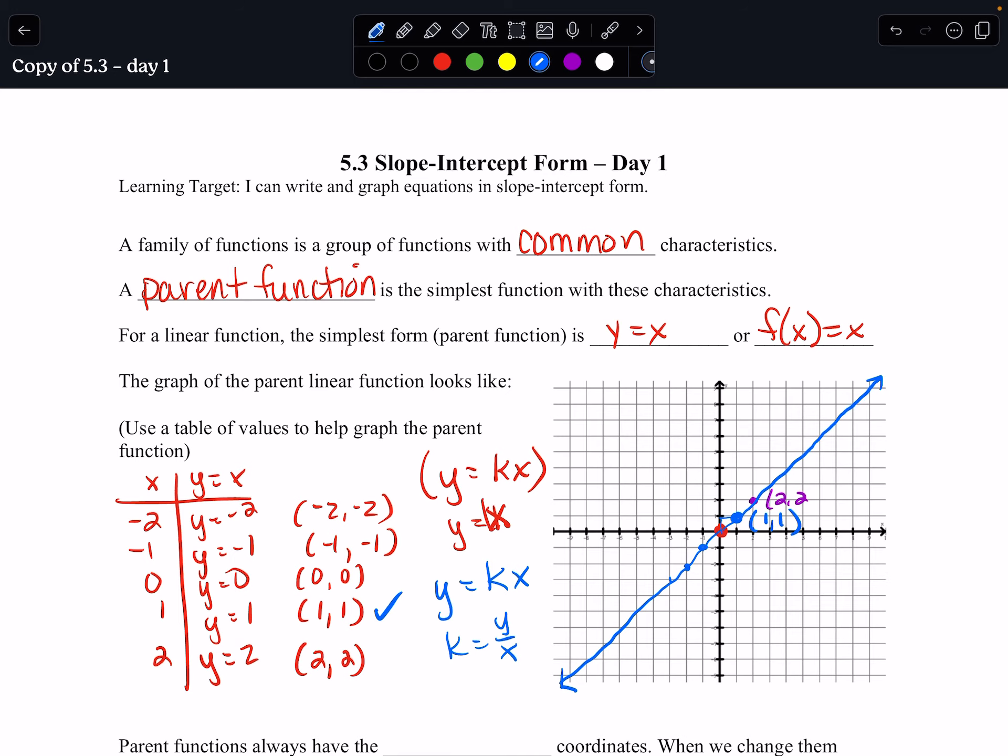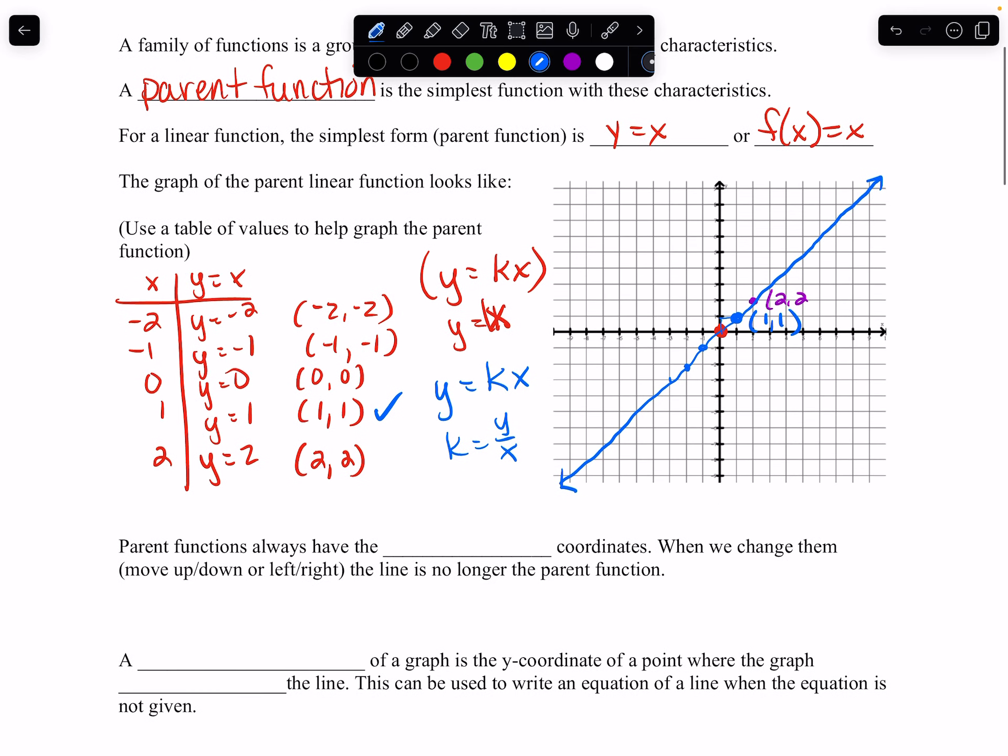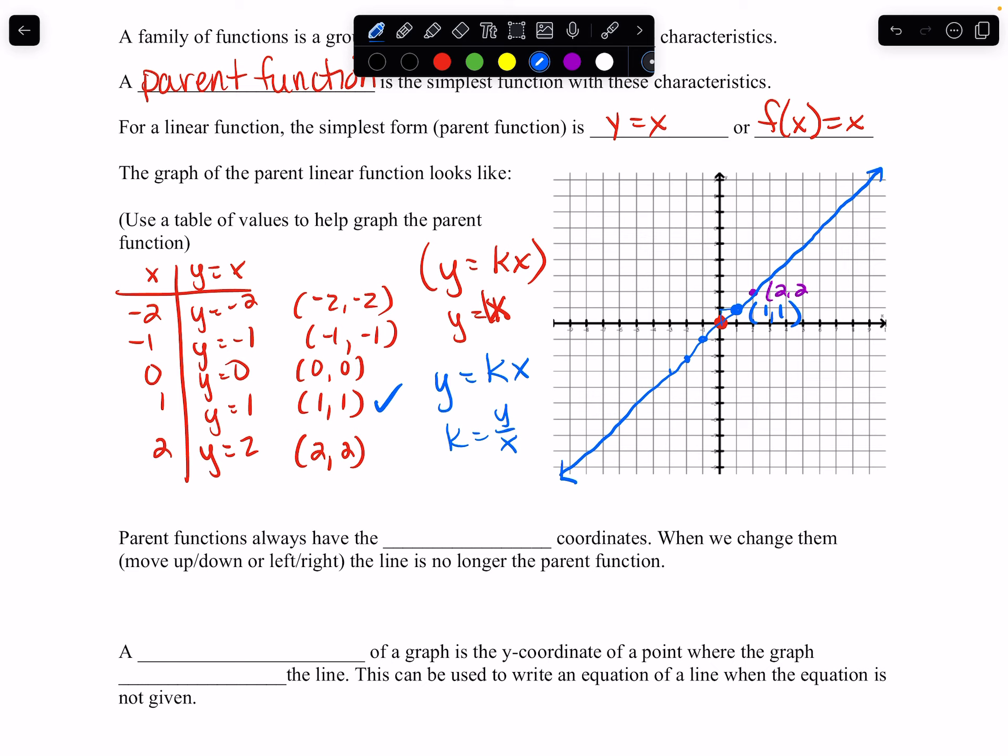If you need to pause to get some of that written, please do so. If not, keep moving. Parent functions always have the same coordinates. We talked about that. 1, 1. Negative 1, negative 1. 0, 0. Negative 40, negative 40.